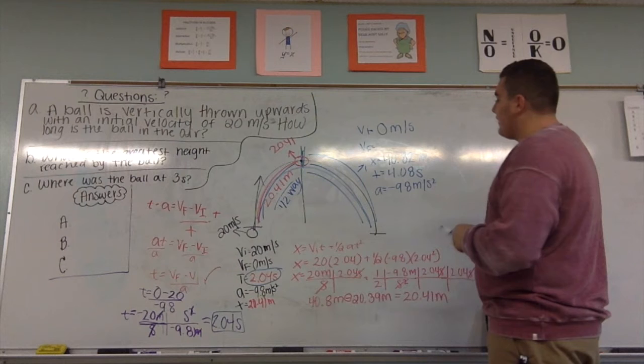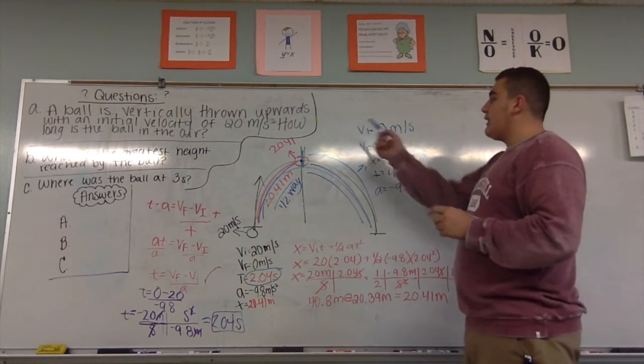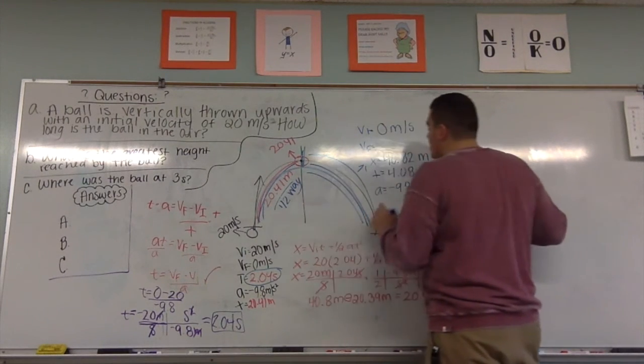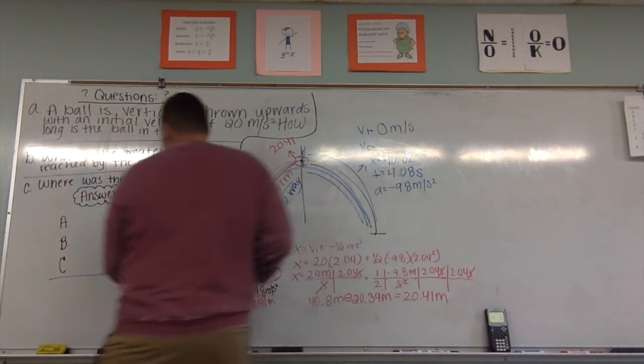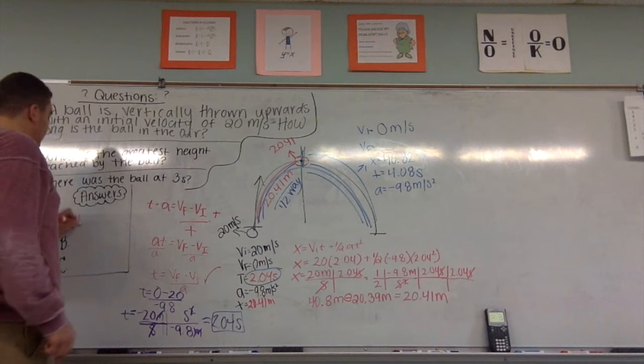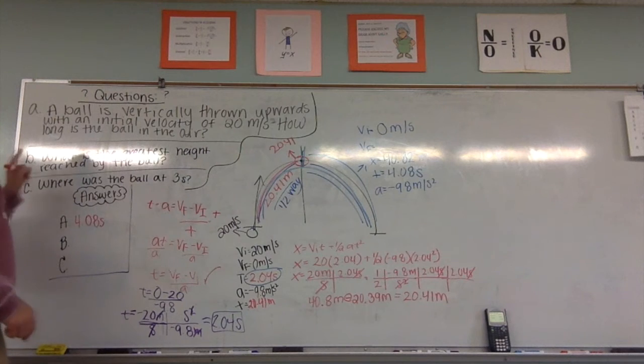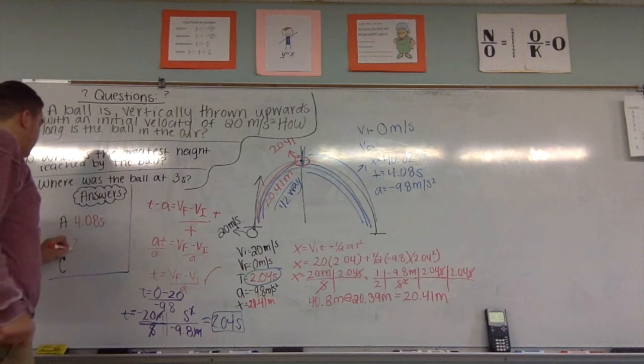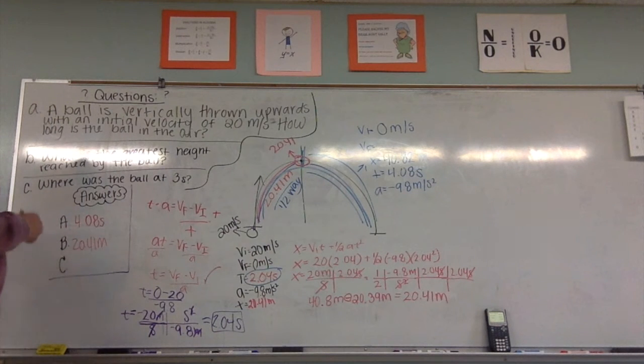Now we have to find our final velocity. So that answers question 1, how long is the ball in the air? So this equals the total time. So we can fill in some of these answers over here. So A is 4.08 seconds. B is what is the greatest height? Right here is our greatest height is 20.41 meters.